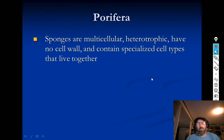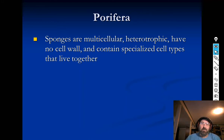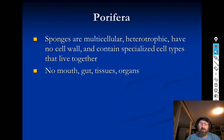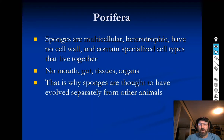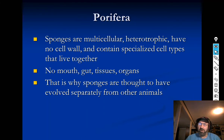Sponges are multicellular, heterotrophic, have no cell walls, and have specialized cell types that live together — that's the definition of an animal. So sponges are animals, but they're really, really simple. They don't have a mouth, a gut, intestines, tissues, or organs — it's really a collection of cells. That's why scientists believe sponges evolved separately from other animals and didn't give rise to any other animal group.